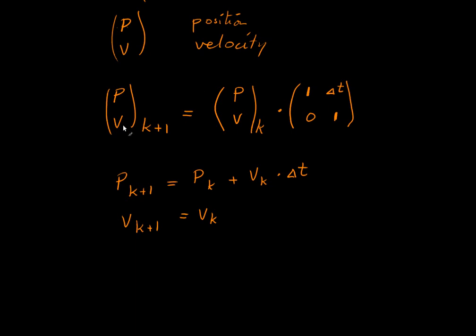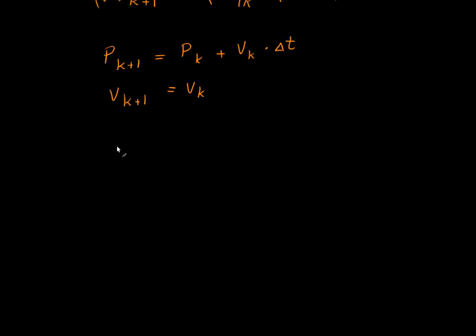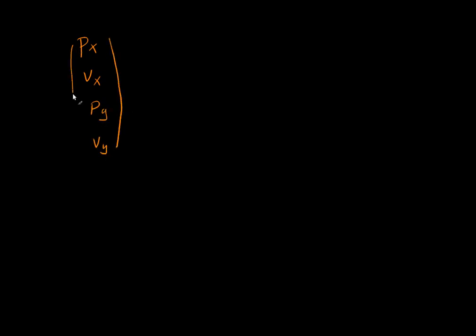The nice thing about this is that this can actually be generalized. So if we have a motion in two dimensions, we want to track both X and Y. We can set it up so we have the position in X and the velocity in X, the position in Y and the velocity in Y. Then this is also a state vector.